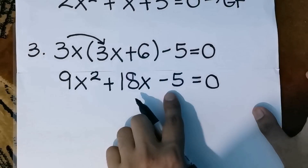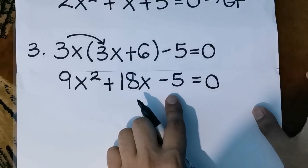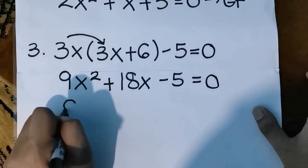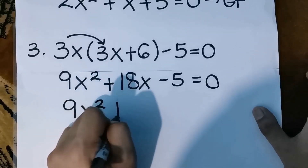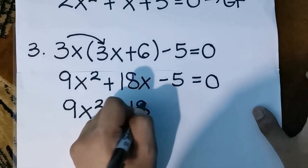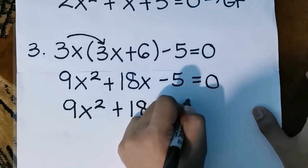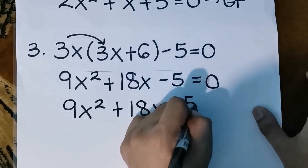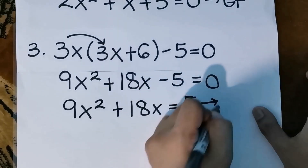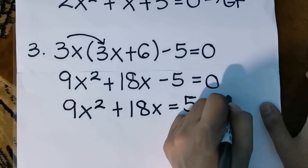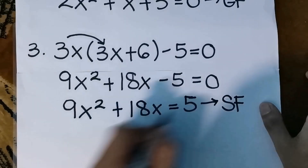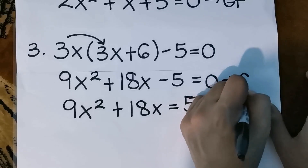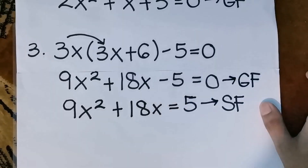Taking the additive inverse of negative 5 and moving it to the right side, it will become 9x squared plus 18x equals positive 5. This will be the standard form. And the general form follows from this as well.